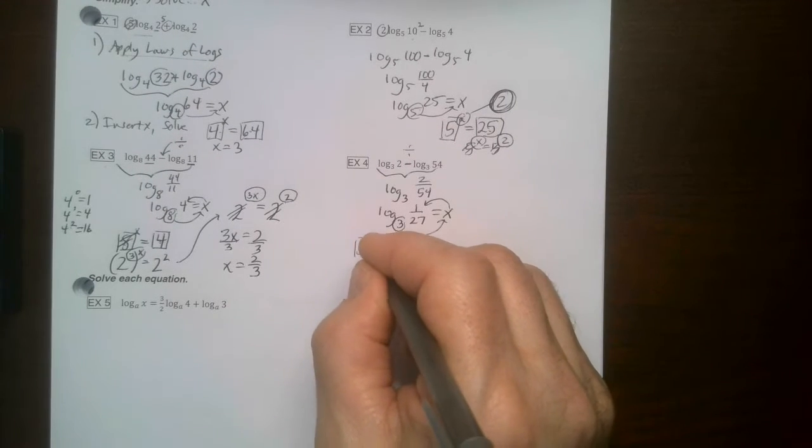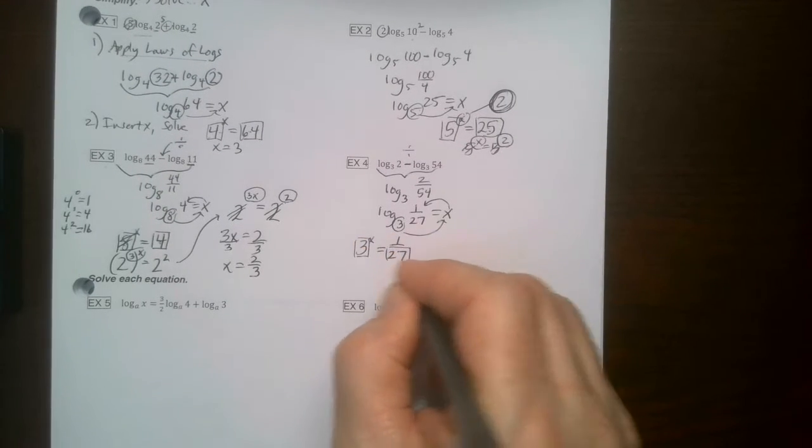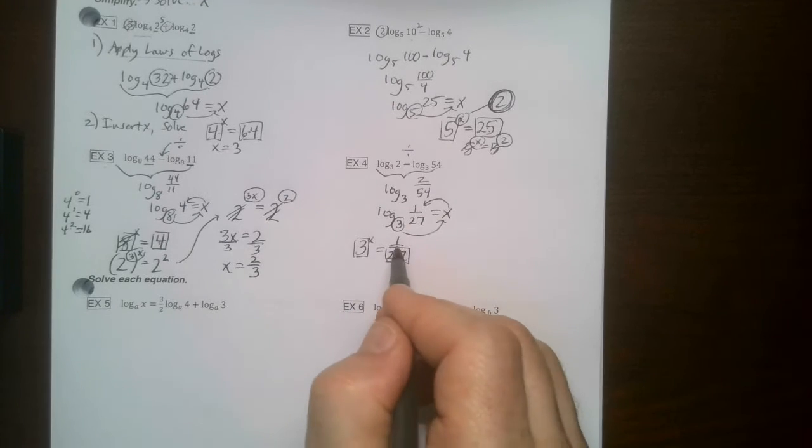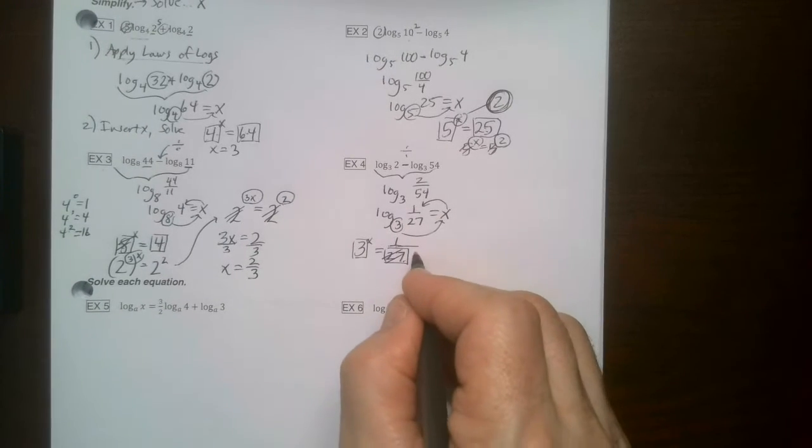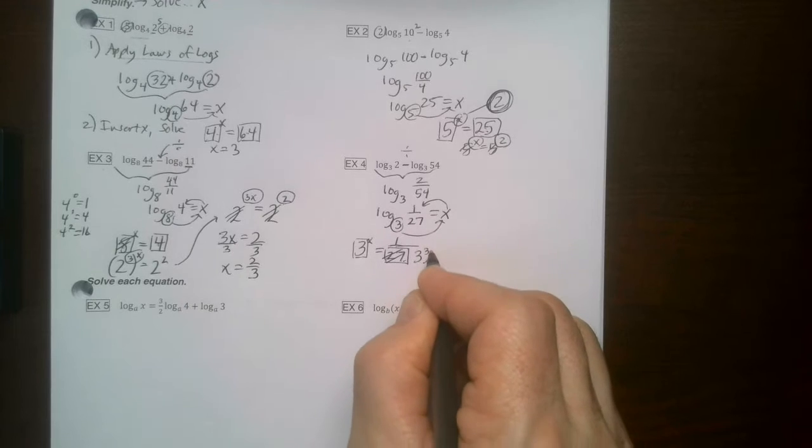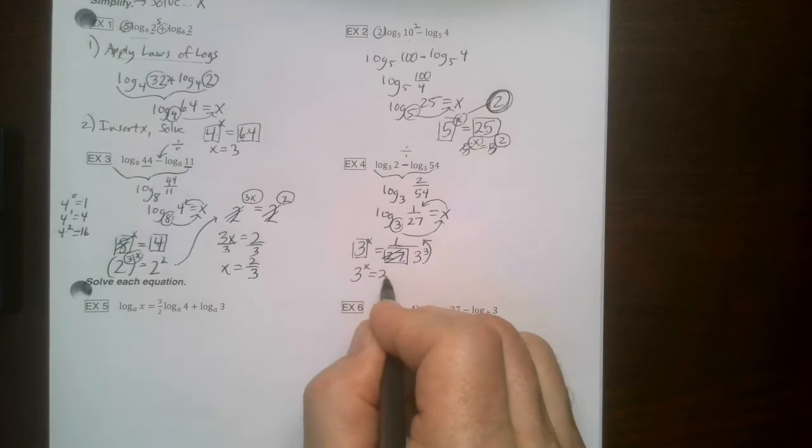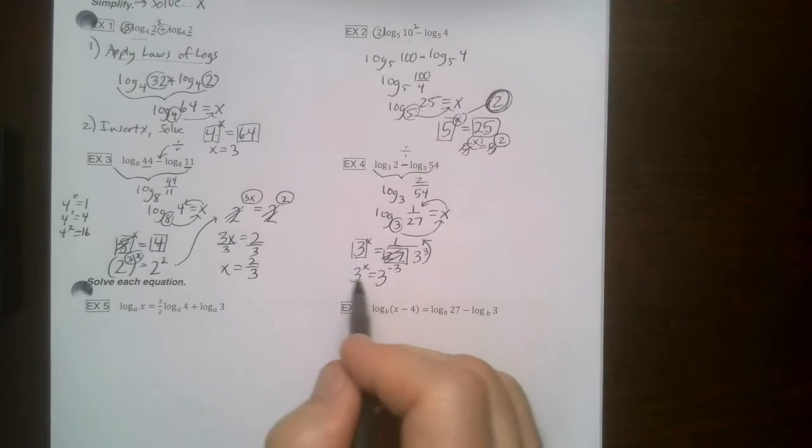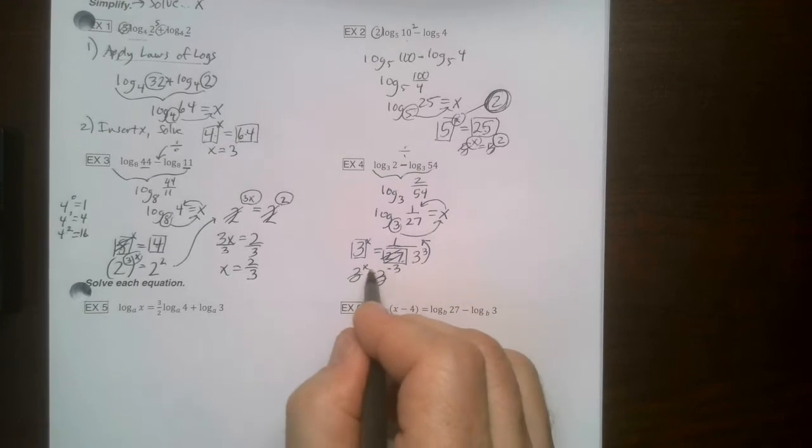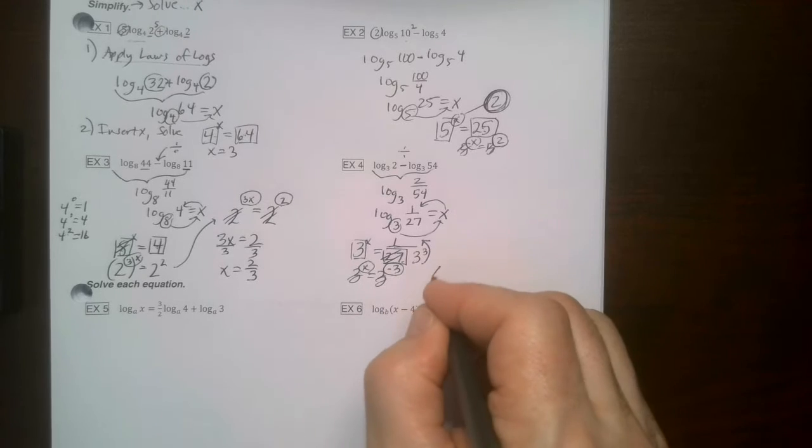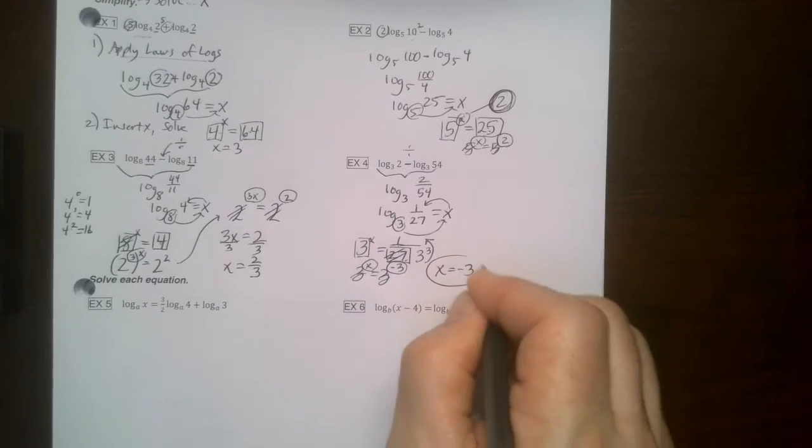Common bases, happy places. I got a 3 and a 27. Which one's bigger? The 27. I'm going to rewrite the 27 as 3 cubed. And I'm going to bring it up, which means it turns into a negative. Now these disappear. So I get X equals negative 3. Done.